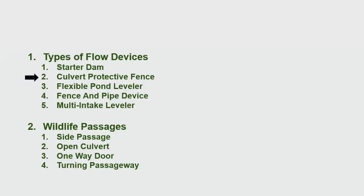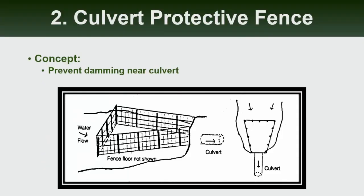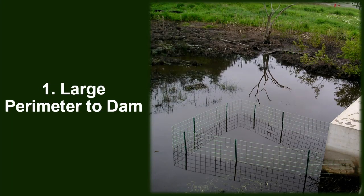Next is what we call the culvert protective fence. This is for situations where you can't put in a diversion dam because you can't allow water fluctuations of two feet. This fence we like to have in a trapezoidal shape — Skip can tell everyone that's really what helps prevent beavers from clogging the culvert. It works for a few reasons: first, it creates a larger perimeter for the beavers to dam on, and we like to go at least 12 feet out, which automatically helps deter them.